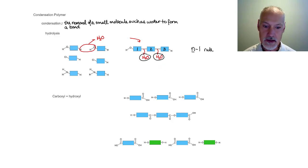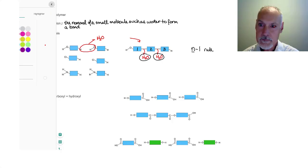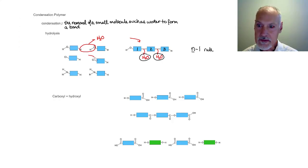Now water is not the only molecule that can be removed. Here I can see I can remove something like HCl in this case. And in this case, I would be removing ammonia. All of these joinings would be classified as condensation polymerization.